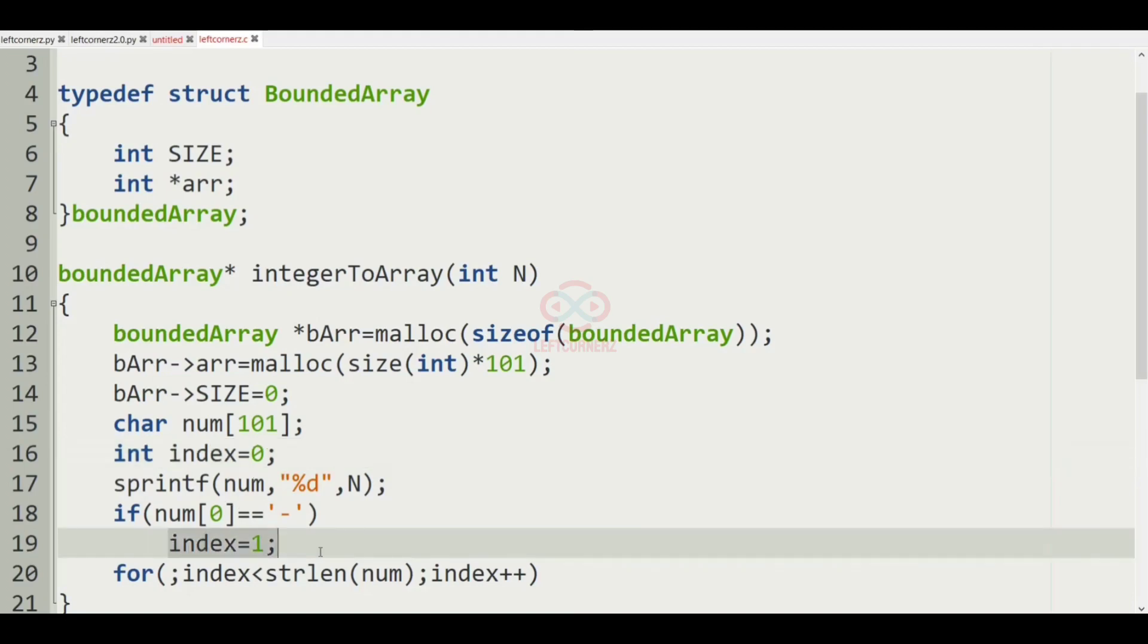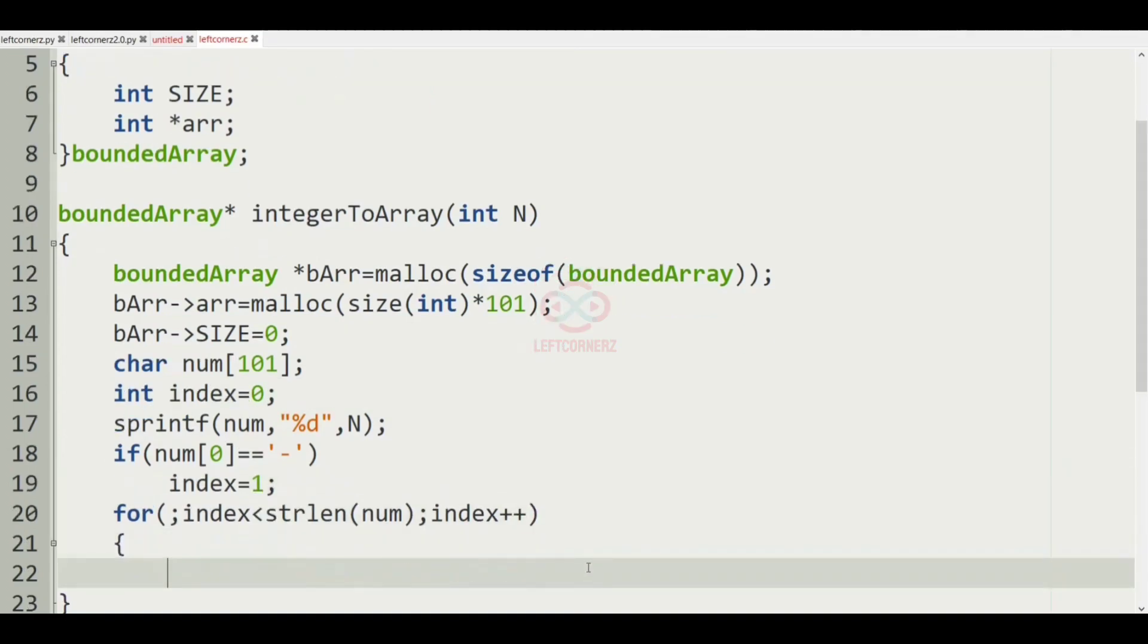Index will be changed to 1 if there is minus sign. Then in this iteration we'll again have the bArr->array[bArr->SIZE++] is equal to num[index].